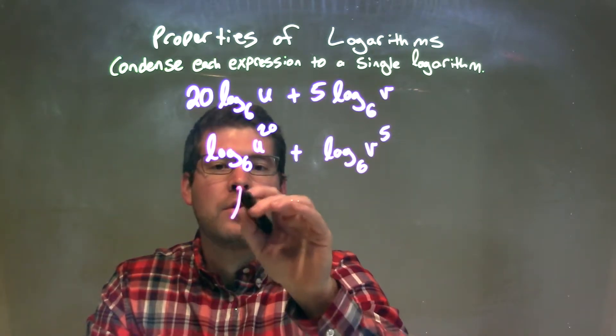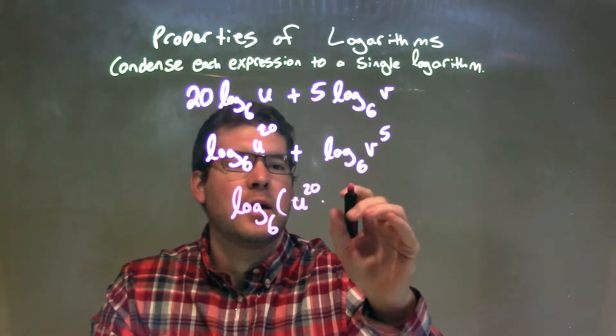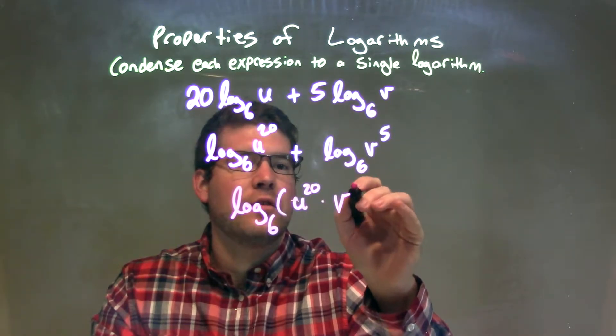So when we write our final answer here, we have log base 6. It's one big log of u to the 20th power times v to the 5th power.